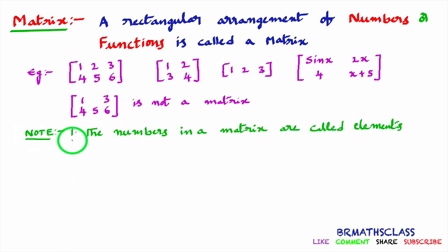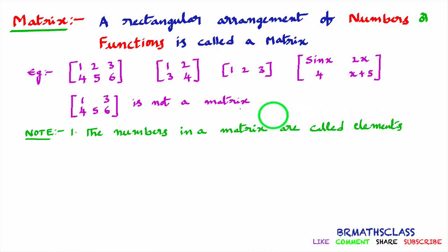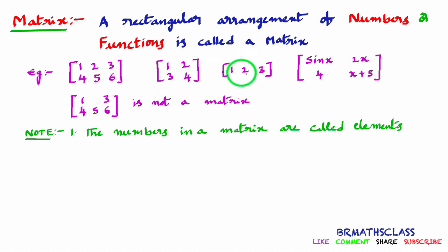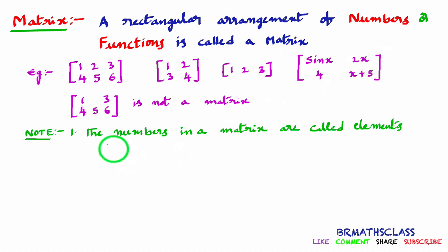This is the first note: the numbers in a matrix are called elements. You see here — 1 is called an element of this matrix, 6 is called an element of this matrix, 2 is an element of this matrix. Sin x is an element in this matrix, x+5 is an element in this matrix. The numbers or functions in a matrix are called elements.